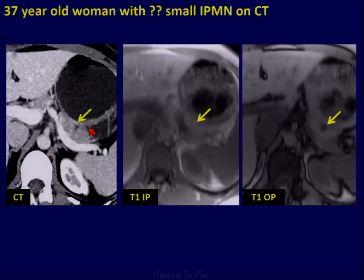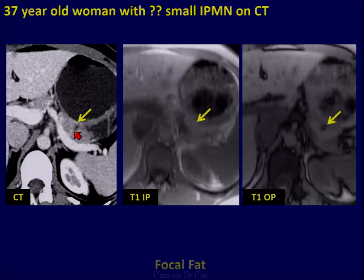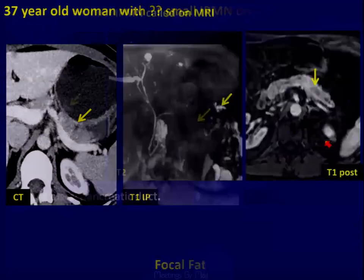This is a more straightforward diagnosis by MRI — it can be a little bit of a challenge on CT. With a low attenuation lesion in the pancreas, easy diagnosis in and out of phase with loss of signal in the opposed phase: this is focal fat.